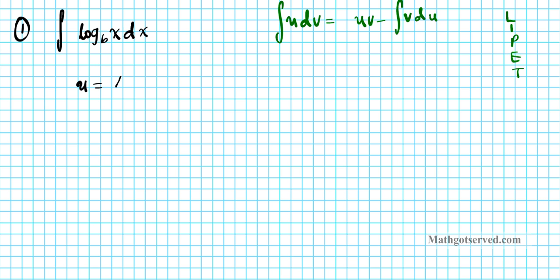So u is going to be log base b of x. Now that we have u, that automatically tells us the other piece is going to be dv. We're splitting this function: this first piece is u, and whatever is left is dv. So dv is dx.